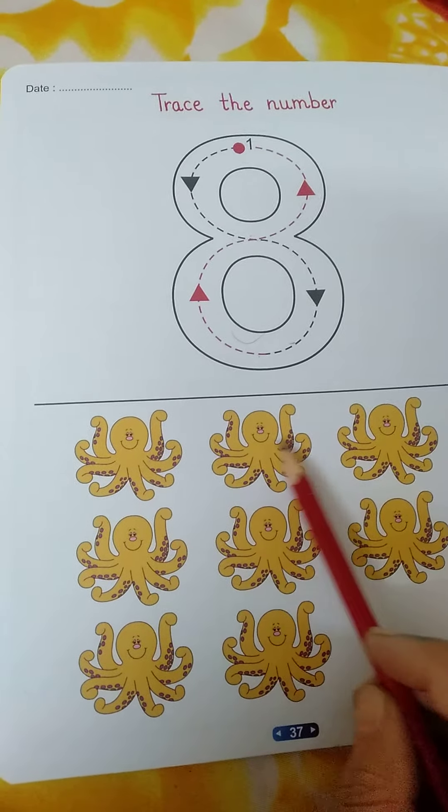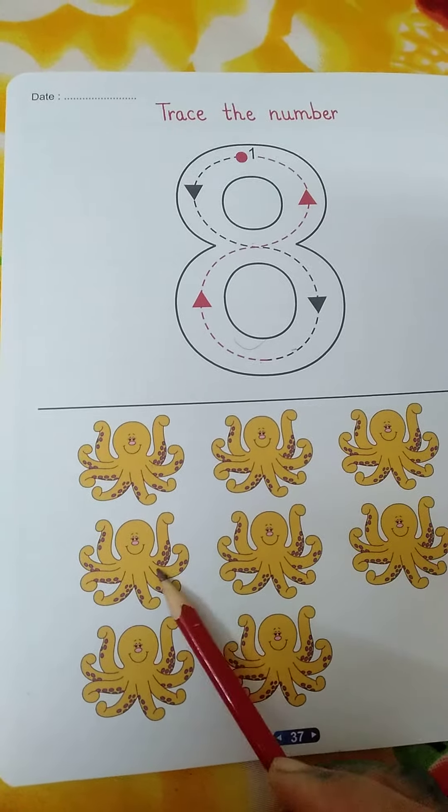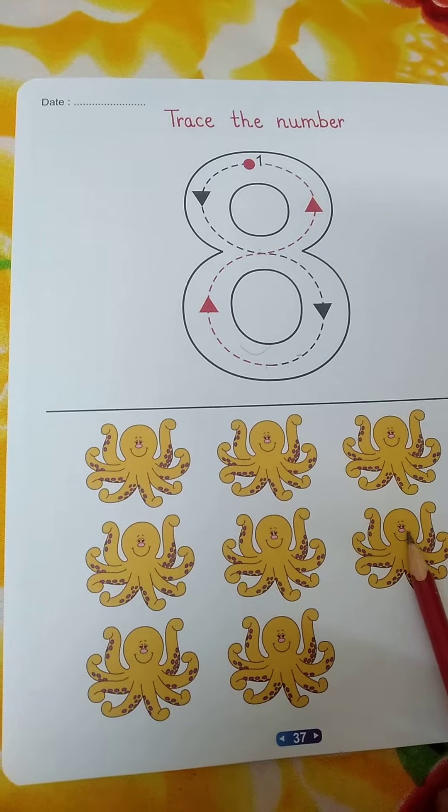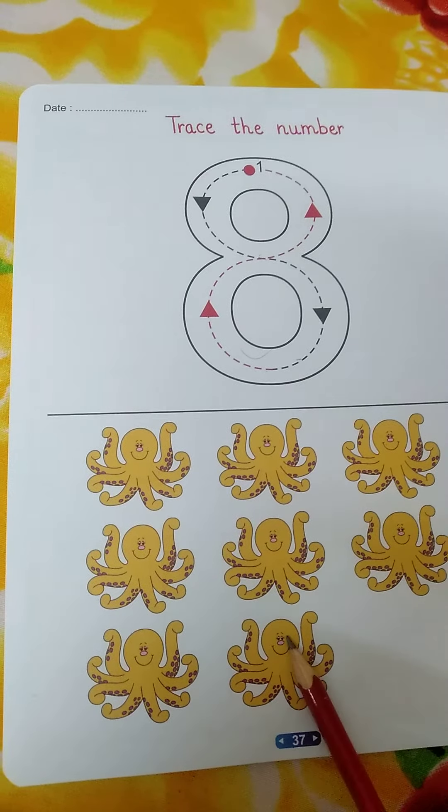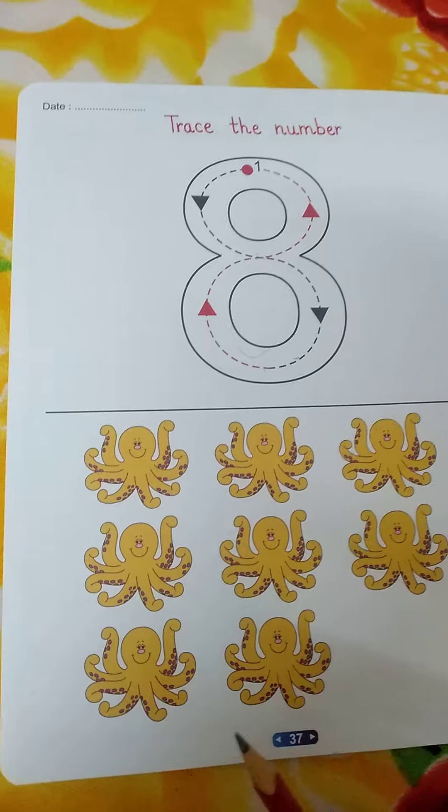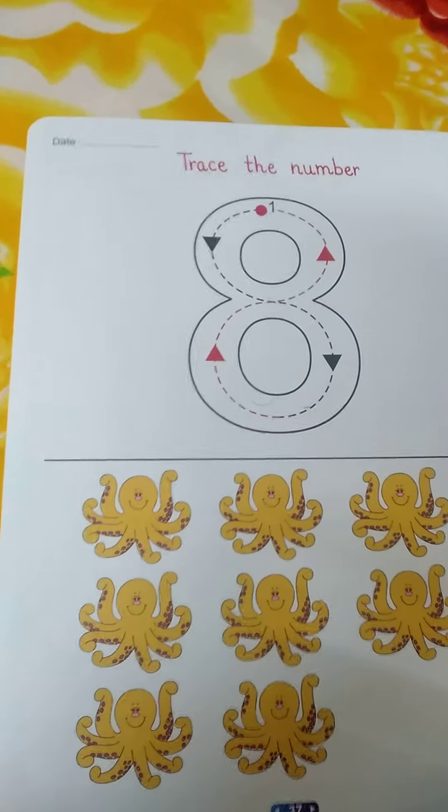1, 2, 3, 4, 5, 6, 7, 8. How many octopus? 8 octopus. Okay children.